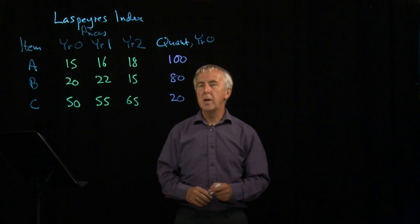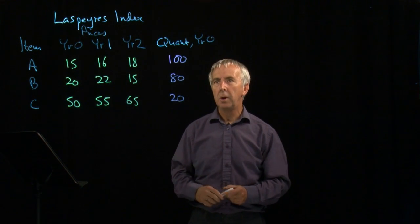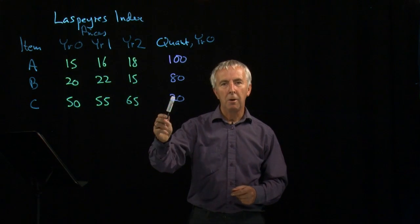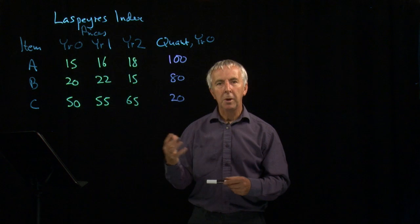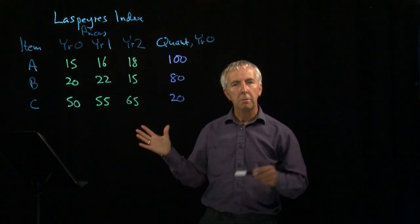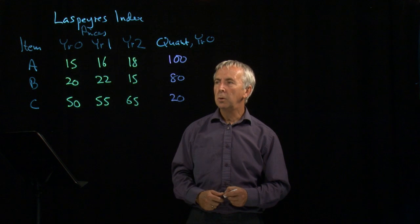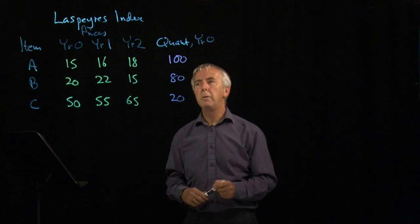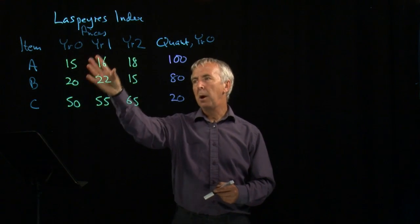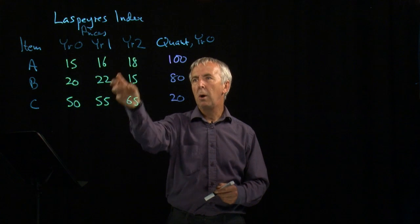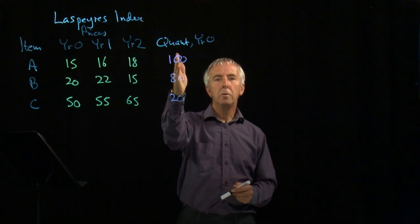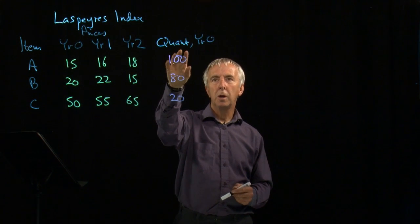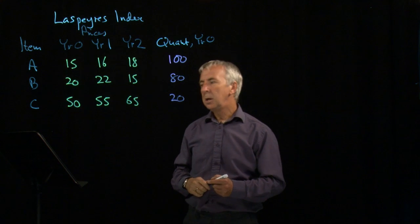What La Spare's index does is take account of how many of each item are actually sold. It's not just their absolute price — it's how many of them. If something has a big rate of inflation but hardly any of it sells, it's not going to affect the basket of goods very much. So with La Spare, we work out the total cost of the basket in year zero, in year one, and in year two, using the quantities sold in one particular year: year zero.